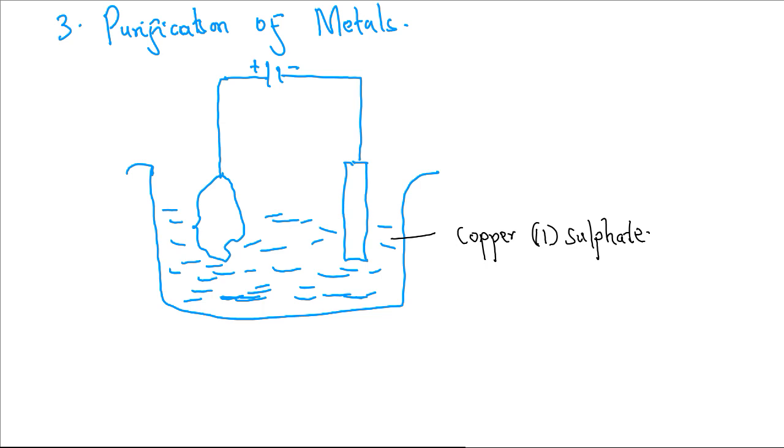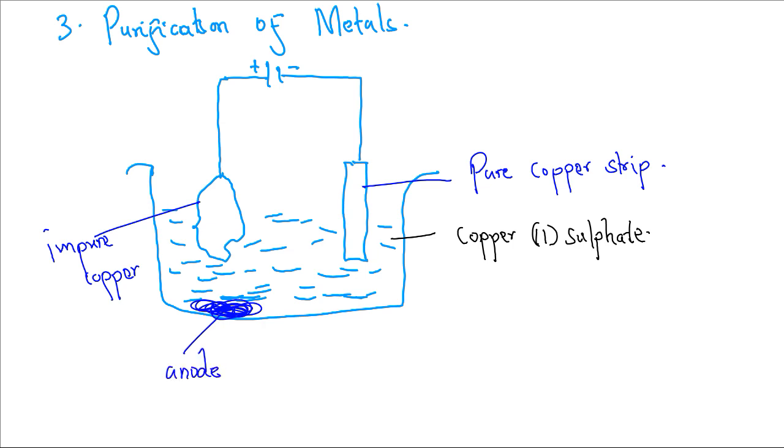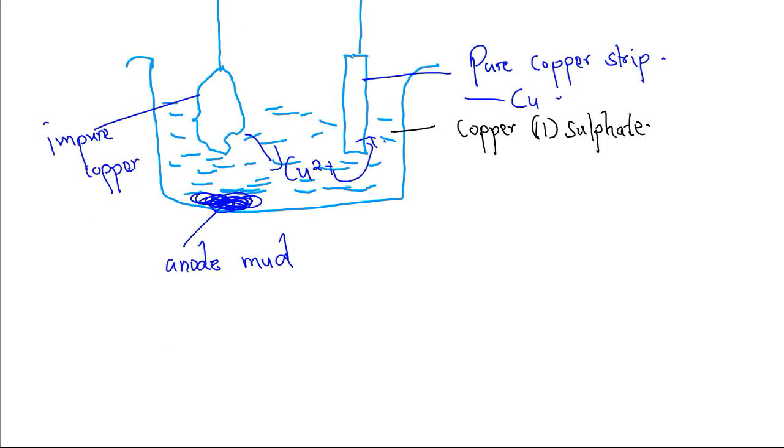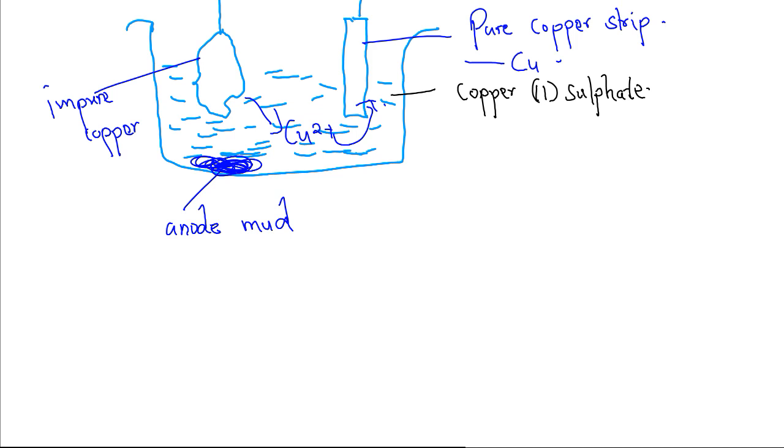The impurities in the copper, this is pure copper strip and we have impure copper. The impurities in the copper will be deposited as anode mud as copper gets into solution, migrates to the cathode, and then produces pure copper. The reaction at the anode takes place first.